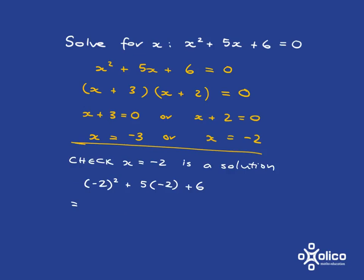And in the same way, we can check whether x = -2 is a solution. So we just put -2 in place of x and we'll get 4 - 10 + 6, which is indeed 0. So this is a solution.